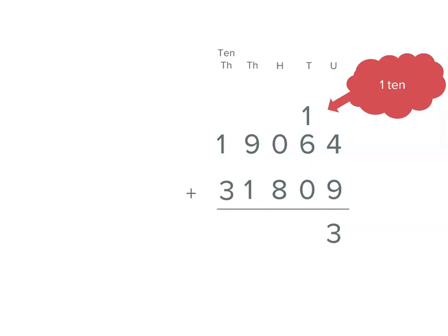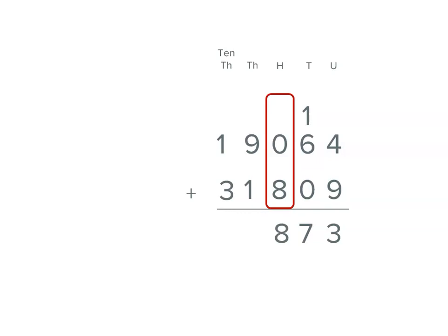So now we've actually got in the tens place, we're going to be adding 1 plus 6 plus 0, or 6 plus 1, which is 7. We keep moving to the left, and now we've got the hundreds place. There's no hundreds in the first number and 8 in the second number, so we have eight hundreds.